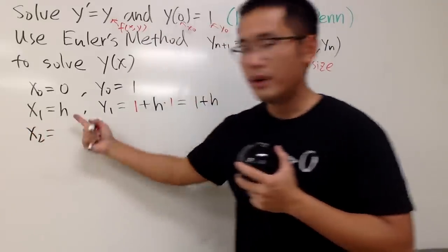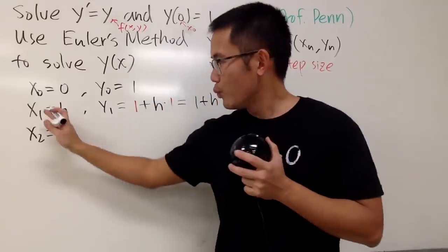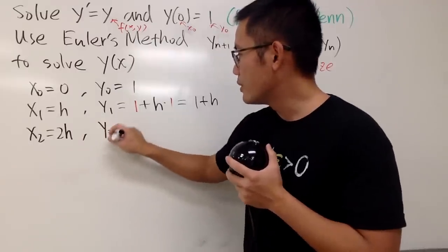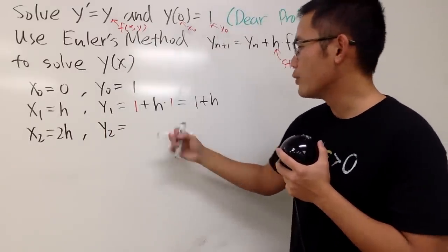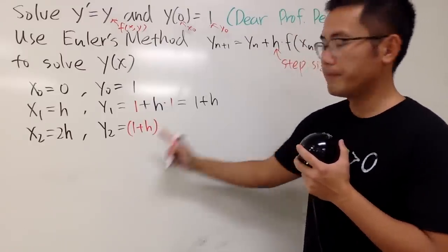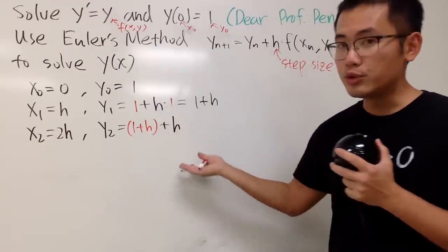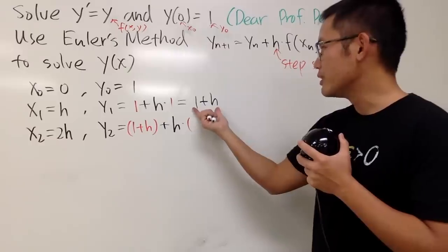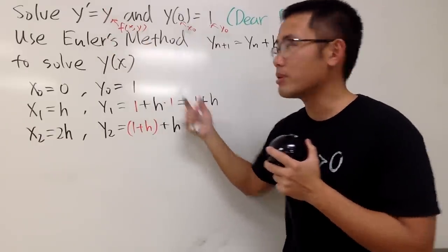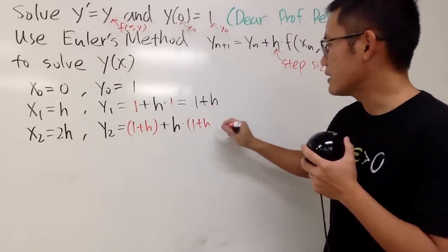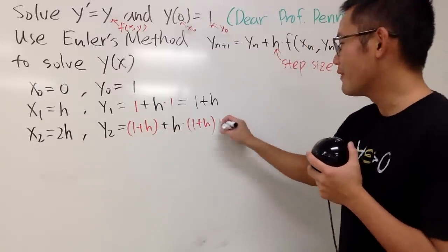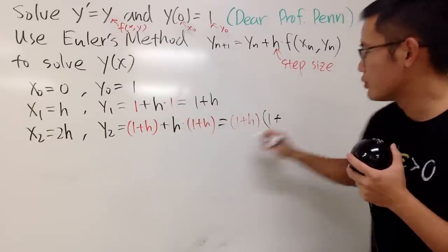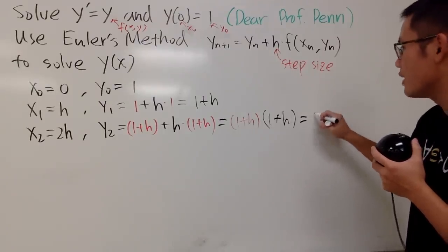Now x2 = 2h. For y2, we take the previous y value, which is 1 + h, and add h times f(x1, y1). Since f is just y, we multiply by 1 + h. So y2 = (1 + h) + h(1 + h). Factoring out (1 + h), we get y2 = (1 + h)². That's very cool.